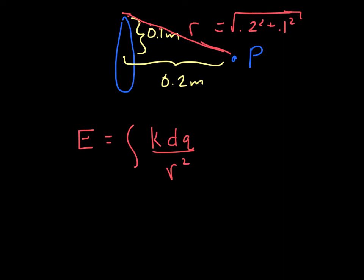Now right here, this dq, again, we're going to replace this with lambda d - I'm going to call it l this time - and it is going to be the circumference of this because that's where your charge is. So if we look at this, it's going to start at 0 and it's going to go towards 2 pi R.